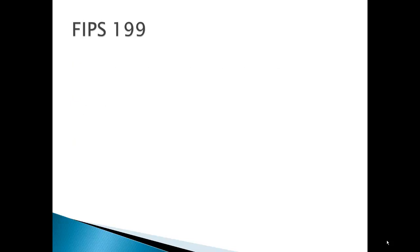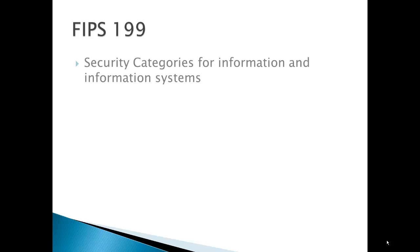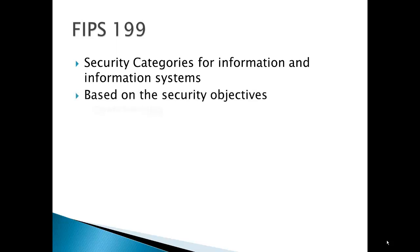FIPS 199 defines the security categories for information and information systems. These categories are based on security objectives: confidentiality, integrity, and availability — our good old friend CIA.